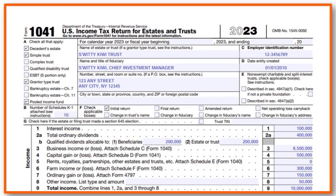Now let's talk about the income section. The income the estate generated this year was $100,000. You have to put total dividends paid into the estate this year. In our case we have $400,000. When it comes to total ordinary dividends, you have a categorization - qualified dividends allocable to beneficiaries and those allocable to the estate and trust. In our case it's 50/50.